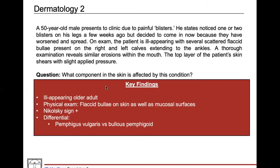We also have a positive Nikolsky sign, indicated by the sentence: 'the top layer of the patient's skin shears with applied pressure.' By taking your finger and rubbing it over the surface of the skin, you either induce the skin to come off or form a blister — that's a positive Nikolsky sign. All of these key points point us toward two diseases: Pemphigus vulgaris or Bullous pemphigoid, which are the top on our differential.